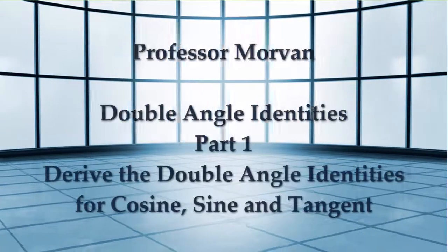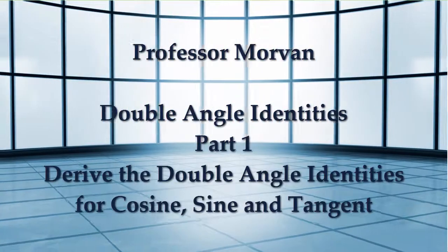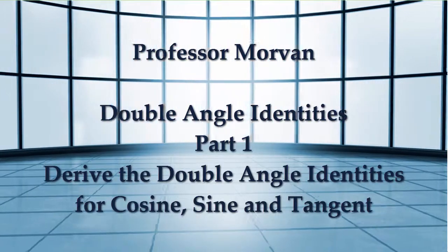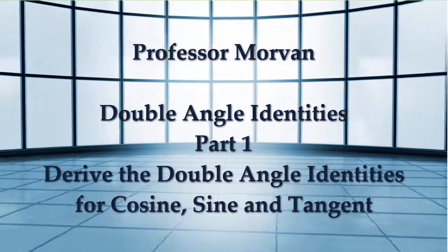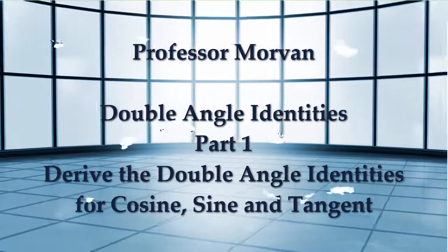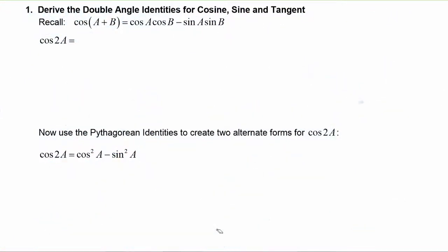In part one of our lesson on double angle identities, we will derive the double angle identities for cosine, sine, and tangent. Recall that the sum identity for cosine is that cosine of a plus b is equal to cosine a cosine b minus sine a sine b.